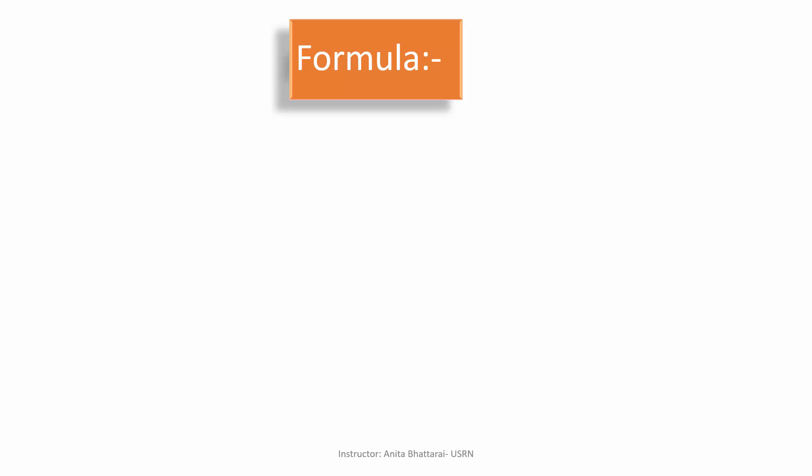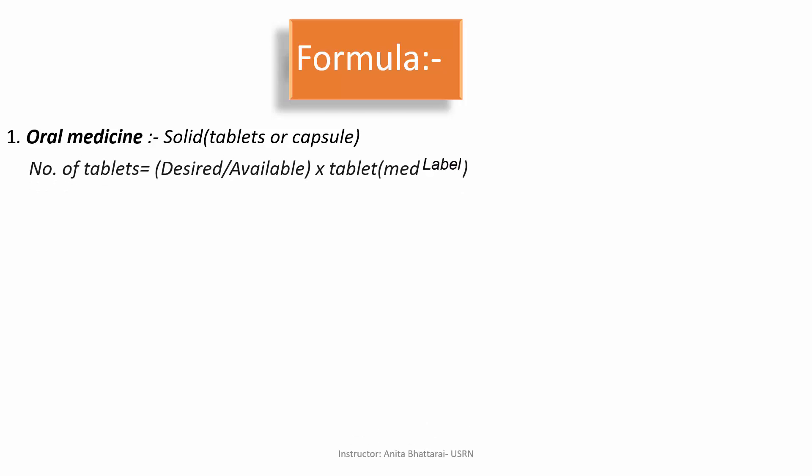Now let's see some formulas that will be very useful while doing calculations. First, for oral medications — in oral forms we can have tablets, capsules, or oral dispensers. For tablets, we need to calculate the number of tablets to administer to the patient. The formula is: desired dose divided by available dose, multiplied by the number of tablets stated on the medication label.